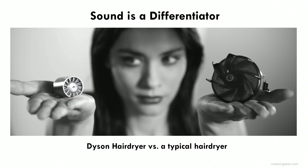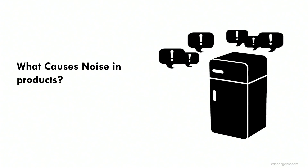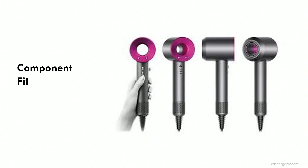Sound is a differentiator in products. The Dyson hair dryer versus the typical hair dryer was a big improvement. They worked for four years to improve removing sound from their product. What causes noise in products? Component fit — in a nice car, it's going to be quieter than a cheap car because the components fit together better.